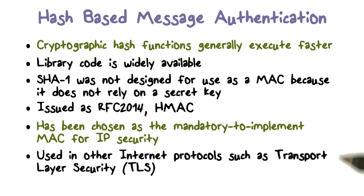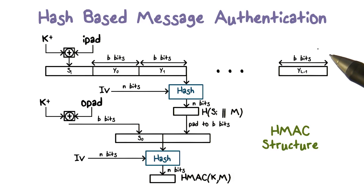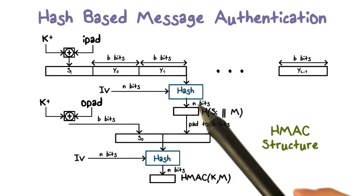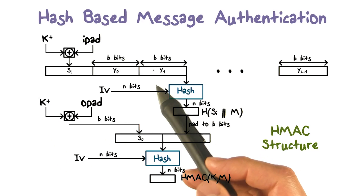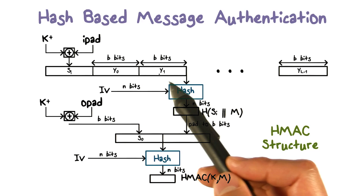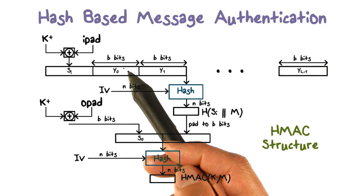HMAC has been adapted to other protocols such as IPSec and TLS. Here's an illustration of how HMAC works. HMAC involves a hash function and also a secret key K. The message M consists of multiple blocks of B bits.